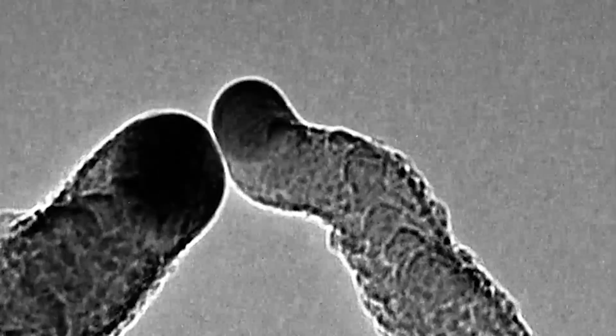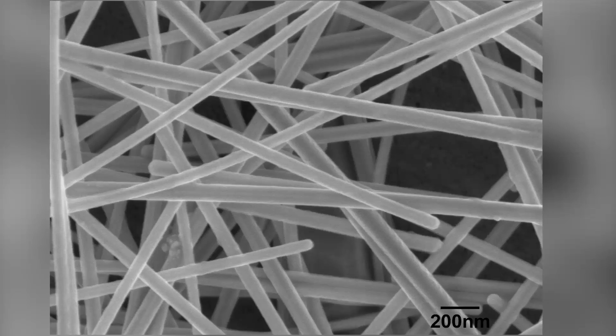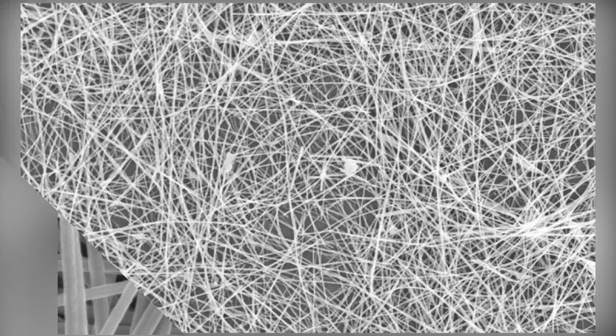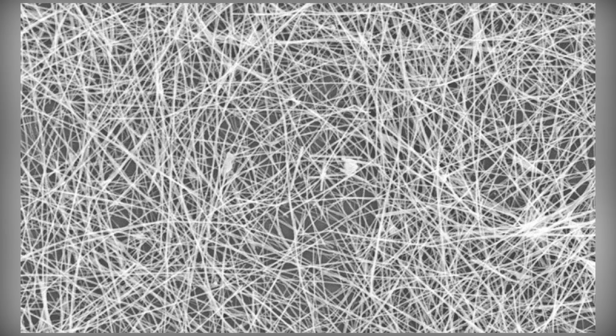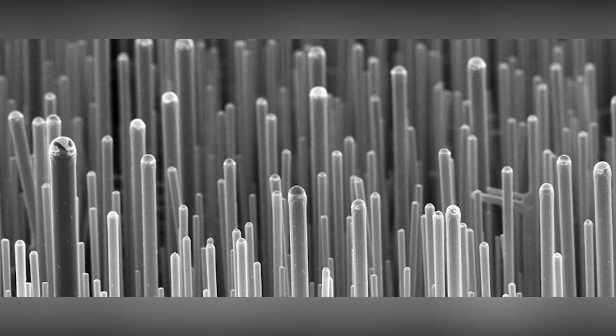Nanowires are hoping to be the base of a battery that never dies. Nanowires are thousands of times thinner than a human hair and made of gold. They're suspended in electrolyte gel to avoid snapping while charging.